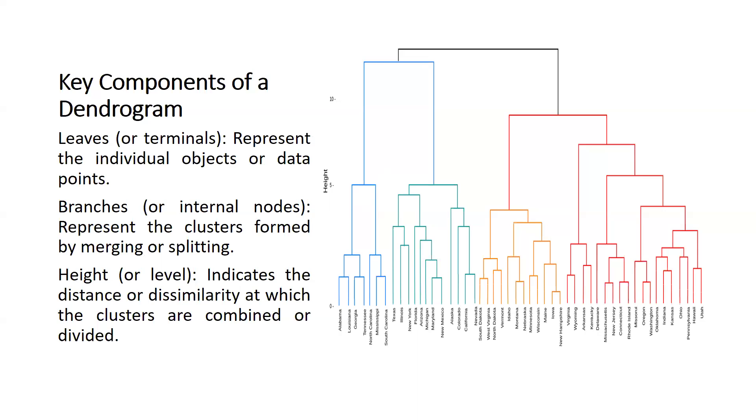One is leaves - leaves we can call terminals - that represent the individual objects or data points. You can see these are the leaves. Second is branches or internal nodes that represent the clusters formed by merging or splitting. You can see here these are merging, and with the help of this these are merged.